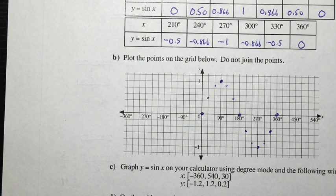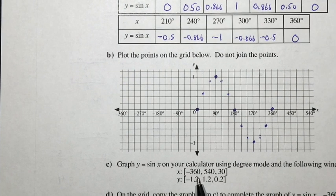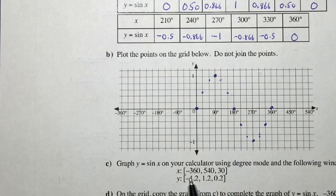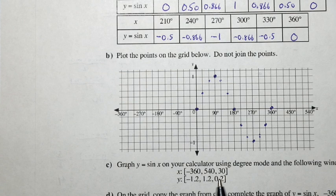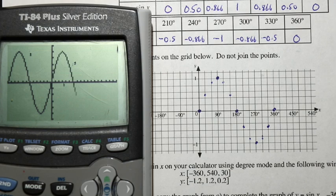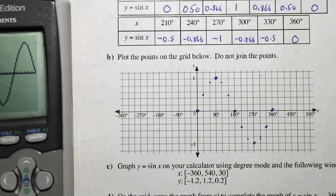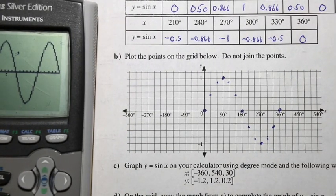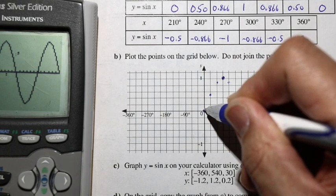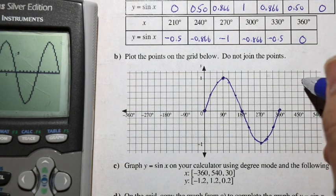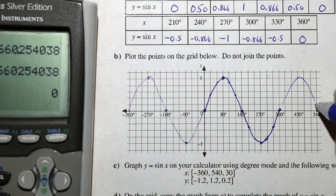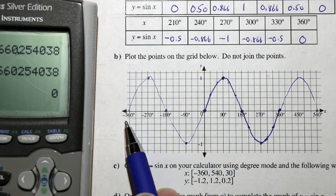So graph y equals sine x on your calculator using degree mode and following this window format. So we have negative 360 to 540, going at 30 at a time. And let's do that. So here we have y equals sine x, window settings, negative 360, 540, going by 30. And graphing that, we can see it looks kind of curvy. So let's use that then to connect these dots in a smooth way. So here we have this comes through. And there you have it. And are we going to complete it all the way to 540? So I just finished the graph for you. It kind of looks like that, all the way from negative 360 to 540.